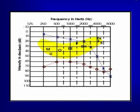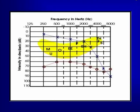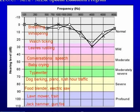Intensity aur frequency mein farq: intensity basically — jitni kam dB number honge utni awaaz aahista sunai degi, jitne zyada numbers badhte jayenge utni intensity ki shiddat barhti jayegi. Jaise radio pe dial ko move karte hain — neeche karenge to awaaz aahista hogi, upar karenge to awaaz unchi hogi. Isi tarah graph mein neeche aate jayenge to awaaz barhti jayegi. 125 se 500 tak low frequencies hain, 1000 se 4000 tak mid frequencies, aur 4000 se onwards high frequencies.